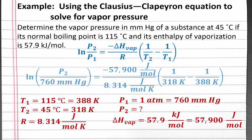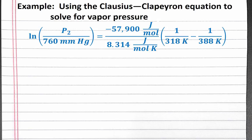We can plug all these values into our equation. Now we need to solve for vapor pressure 2. Multiplying everything on the right, we get the number negative 3.951. This number is unitless because all our units have canceled out.